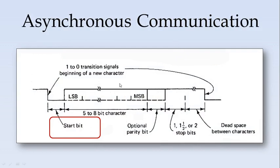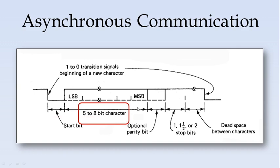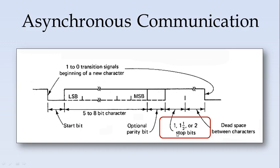First we will see asynchronous communication. Since there is no common clock, a signal transition from one to zero indicates the beginning of a new character. So first there is a start bit, which is called a mark — a transition from one to zero indicates a start of transmission. Then we have a character which might be five to eight bits in length, followed by an optional parity bit. Then there is a stop bit, which could be one, one-and-a-half, or two bits in duration. After that there may be some dead space between characters, and again a one-to-zero transition indicates transmission of a new character.